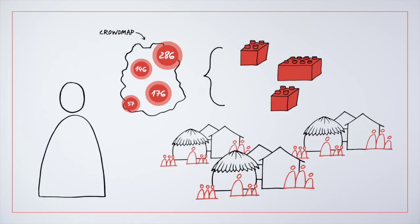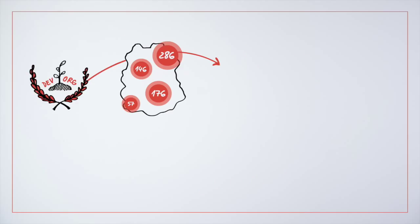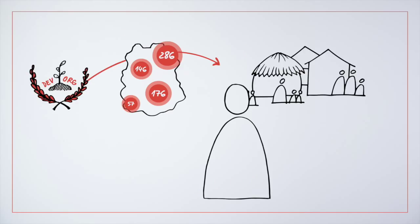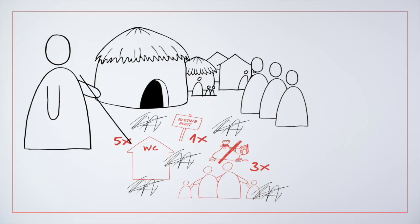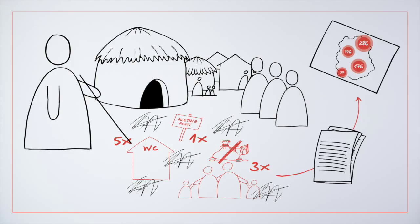Her organization used crowd mapping before, meeting with community members to draw out important details of a neighborhood. But the process was low-tech and involved drawing a first draft in the dirt in villages before converting it into a printed form.